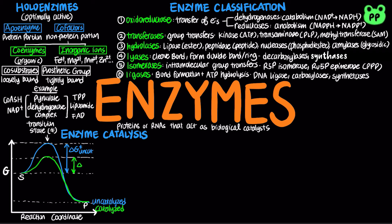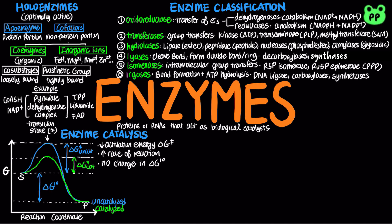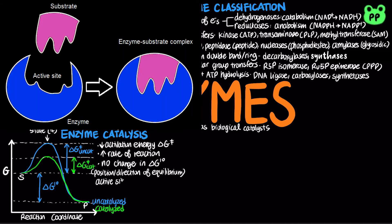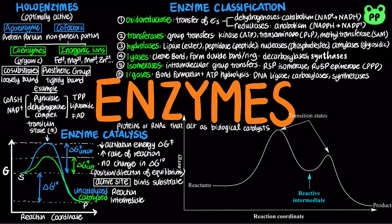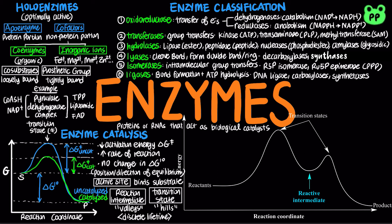In an enzyme-catalyzed reaction, the enzyme increases the rate of reaction by lowering the activation energy. However, enzymes do not affect the net change in free energy or delta G0, which is the energy difference between substrate and product and represents the position and direction of equilibrium. The active site is the region on the enzyme where the substrate binds. Many reactions have several steps involving the formation and decay of transient chemical species called reaction intermediates, which are represented by valleys in the reaction coordinate diagram. A reaction intermediate differs from a transition state in that an intermediate has a discrete lifetime, whereas a transition state lasts for only one bond vibration cycle.